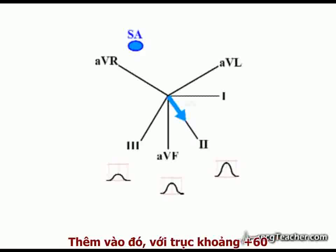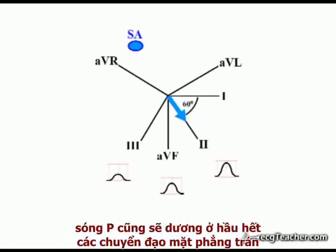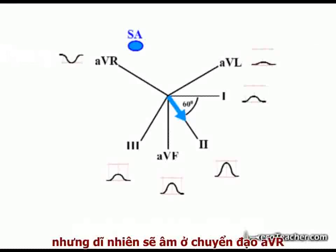Also, with an axis at plus 60 degrees, the P-wave is positive in most of the frontal leads, but of course is negative in AVR.